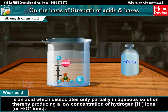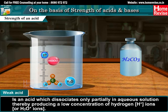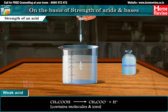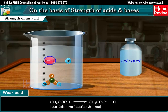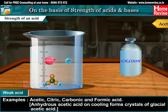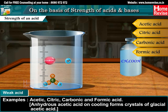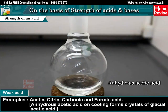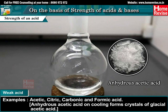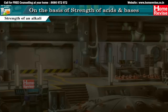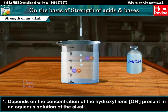A weak acid is one which dissociates only partially in aqueous solution, producing a low concentration of H+ or H3O+ ions. CH3COOH reversibly gives CH3COO- plus H+. Contains molecules and ions. Examples: acetic, citric, carbonic, and formic acid. Anhydrous acetic acid on cooling forms crystals of glacial acetic acid.